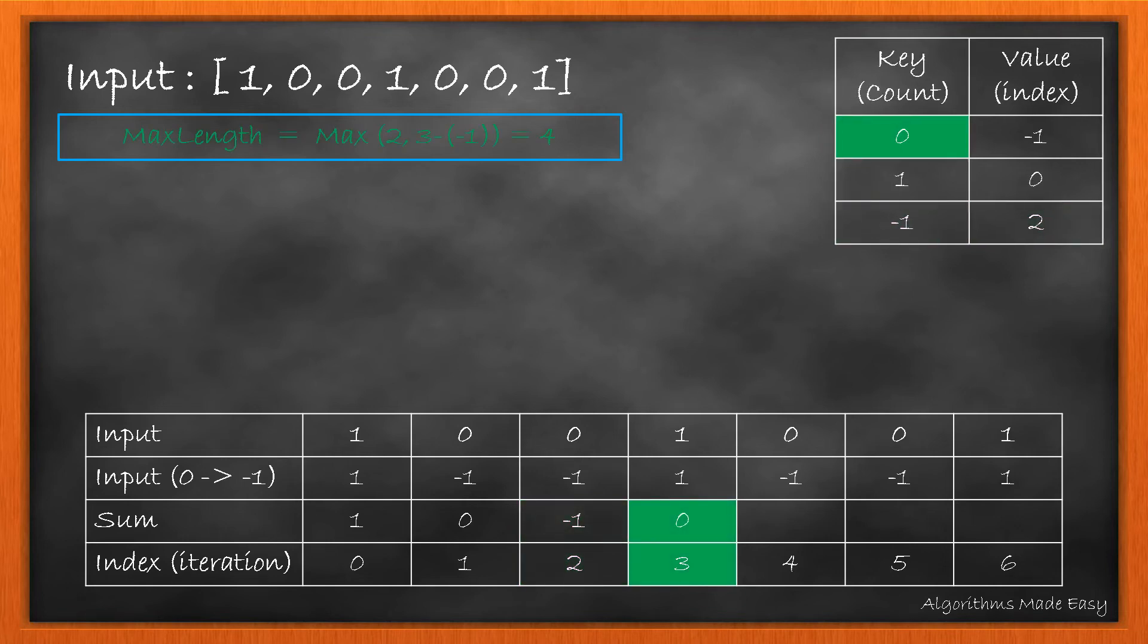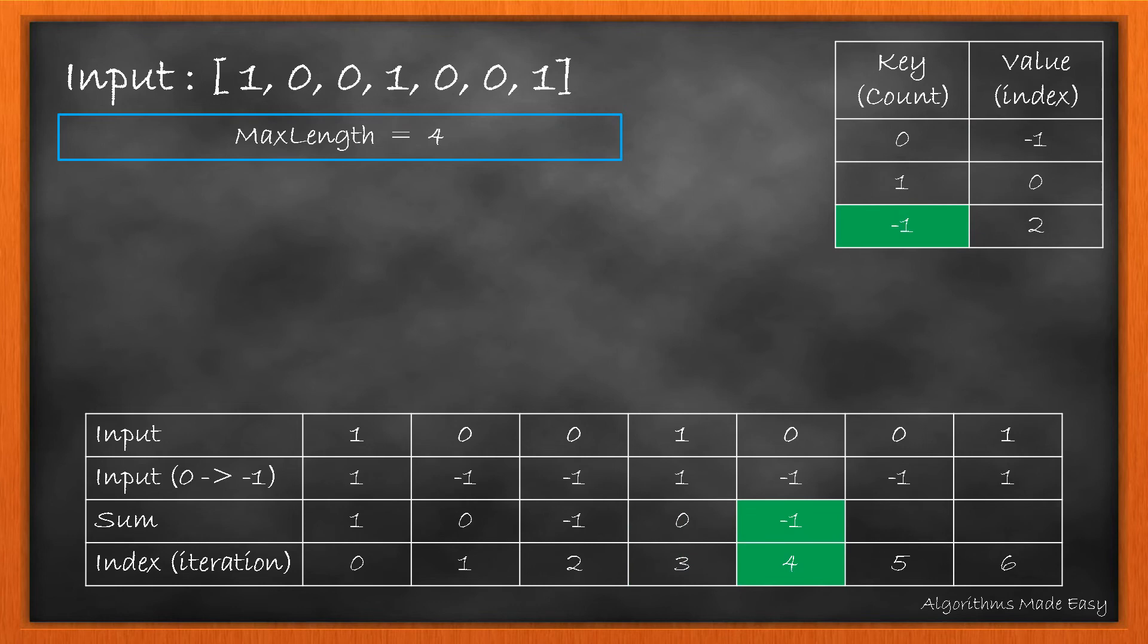We now check the next index. Here the sum becomes 0 again, so we calculate the max length again. Max length becomes maximum of 2 and 4, which comes out to be 4.